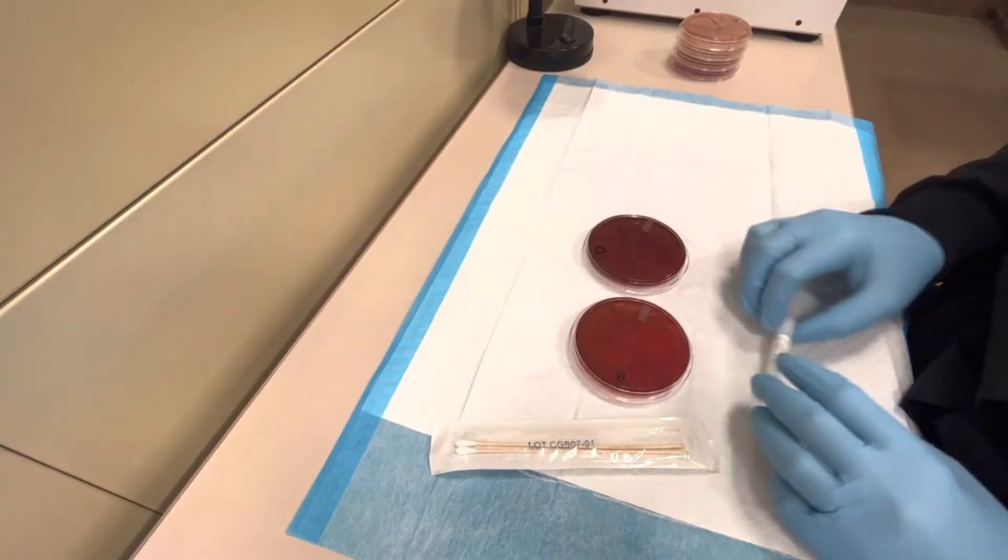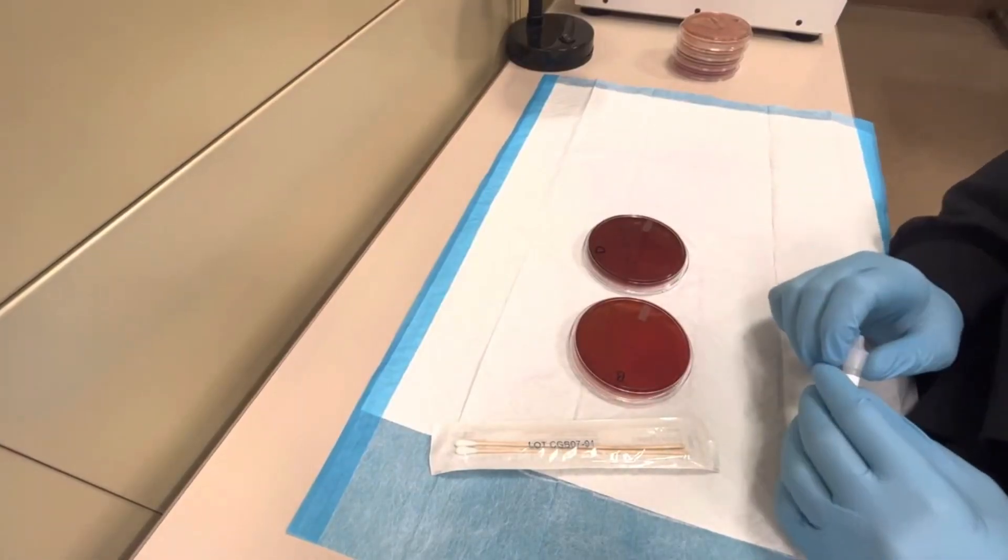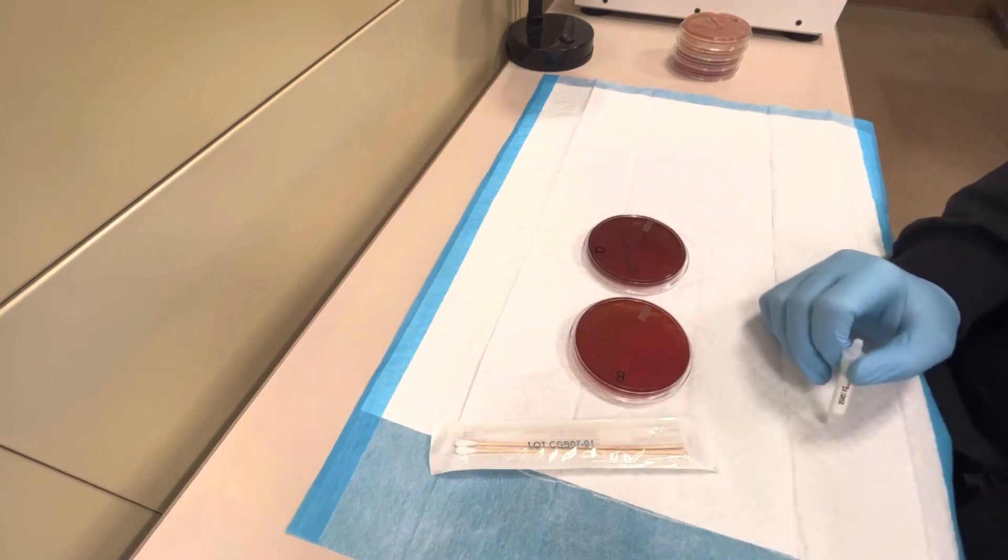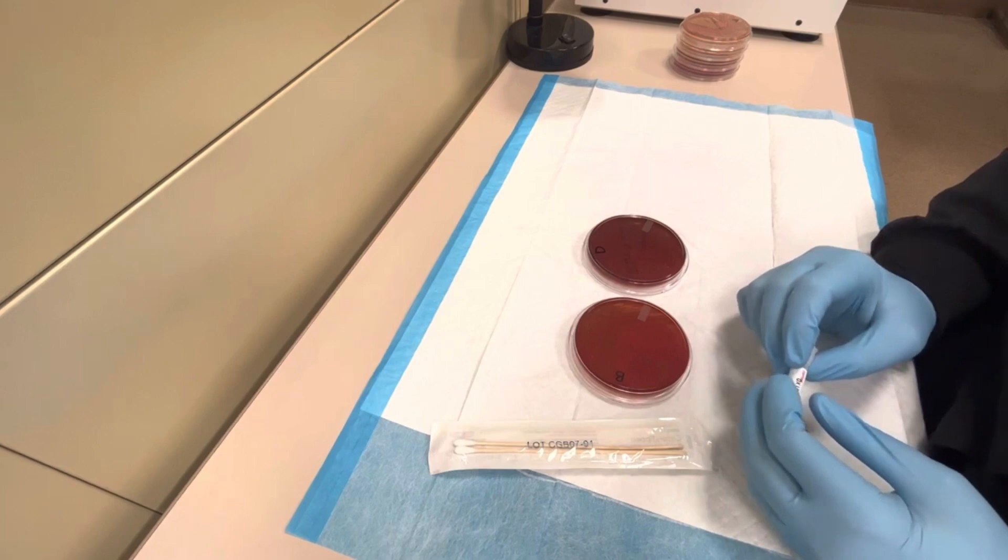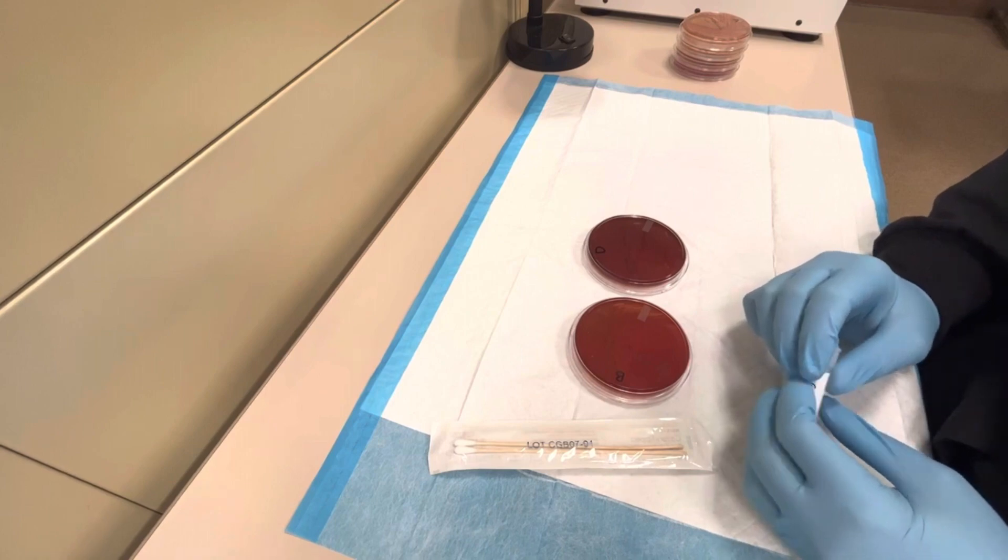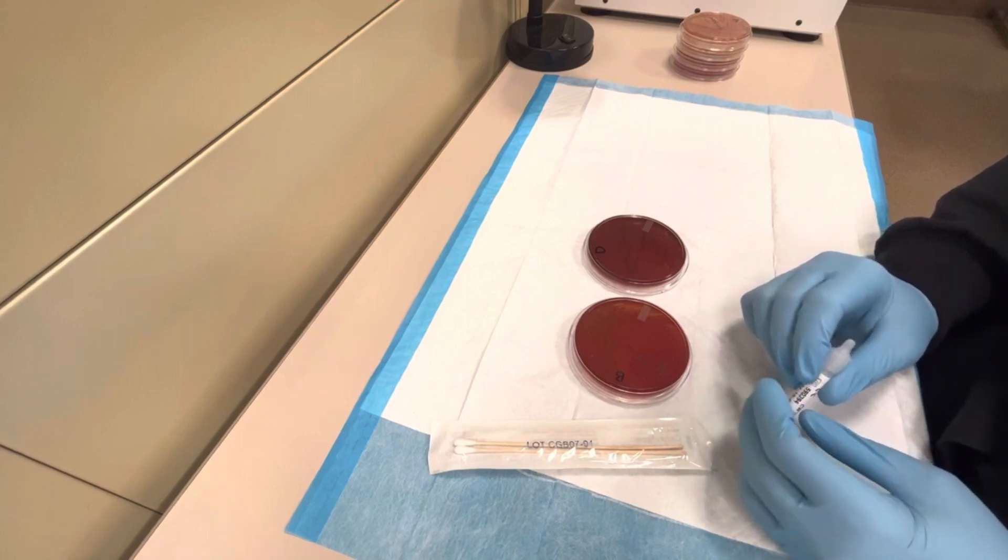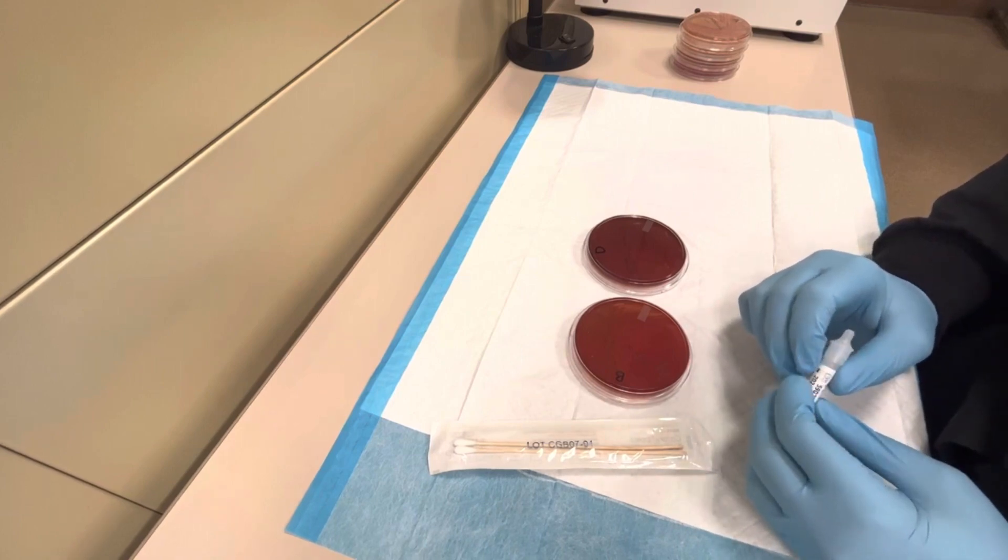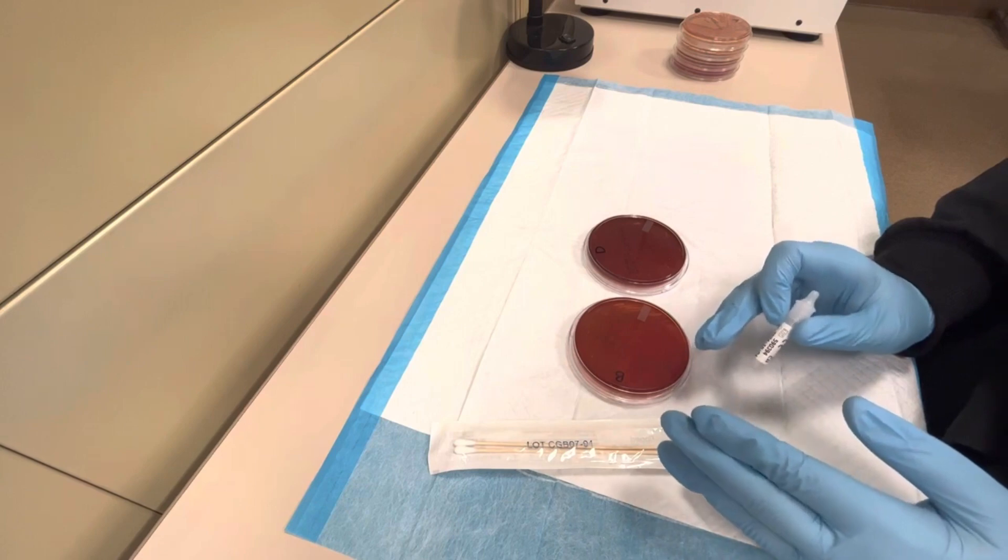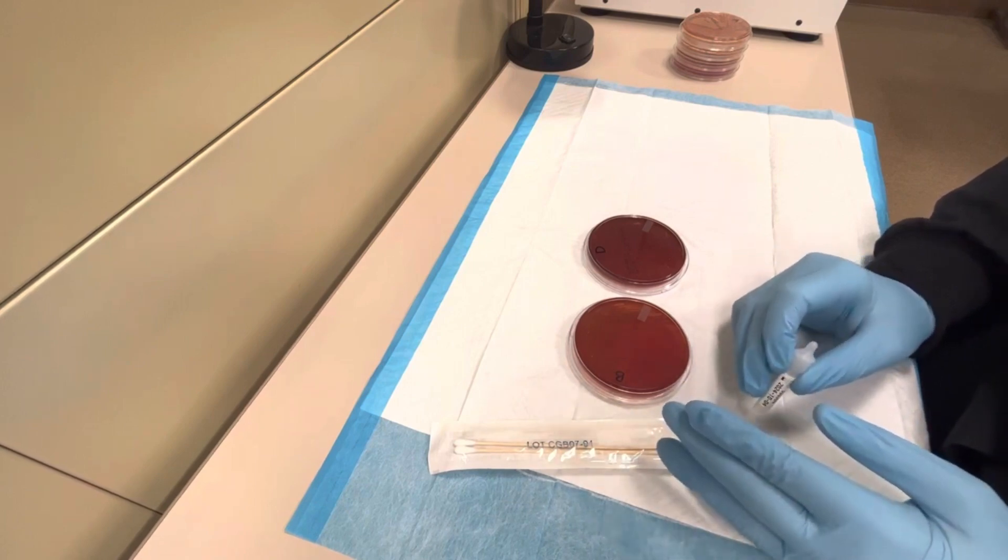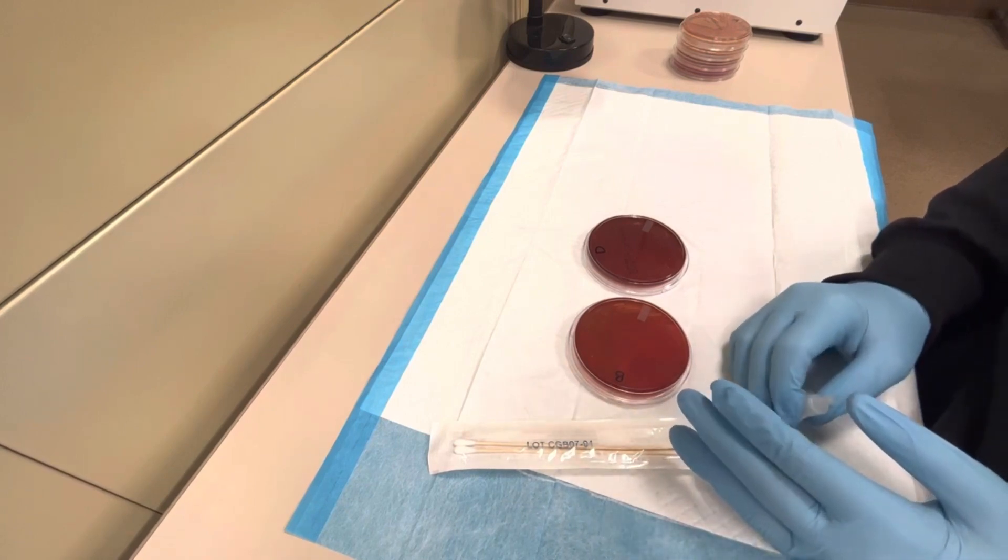Today I'm going to demonstrate the oxidase test. The oxidase test is used in the microbiology lab to identify organisms that produce an enzyme called cytochrome C oxidase. This oxidase enzyme helps catalyze the oxidation of cytochrome C, which catalyzes the transport of electrons from NADH to electron acceptors, which are usually oxygen.